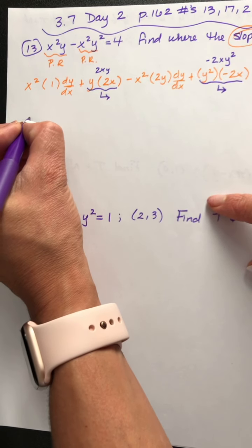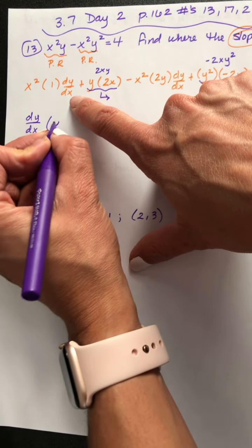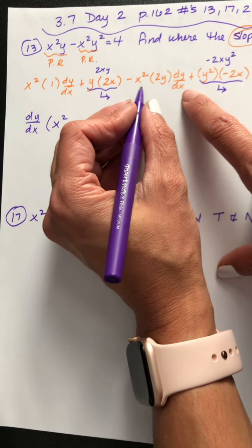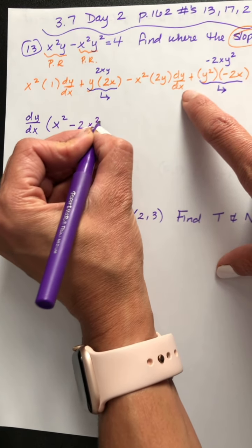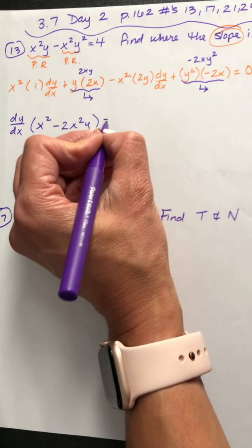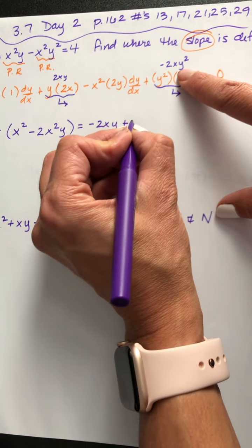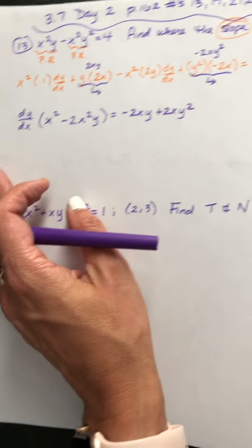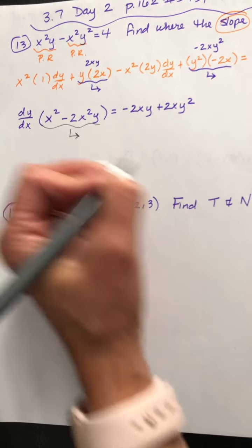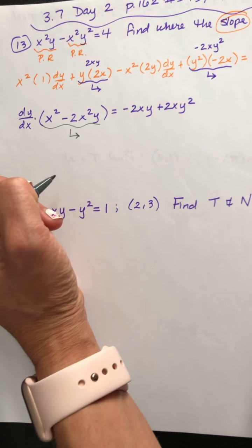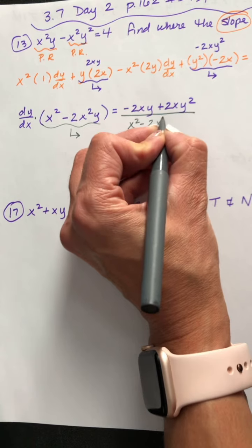Now, in the same step, I'm going to factor out dy dx. The first term that has it is x squared times 1, which is just x squared. The next has dy dx, and that's negative x squared times 2y, so minus 2x squared y. The other terms move to the right. We divide by x squared minus 2x squared y to isolate dy dx, and now we have the slope formula.